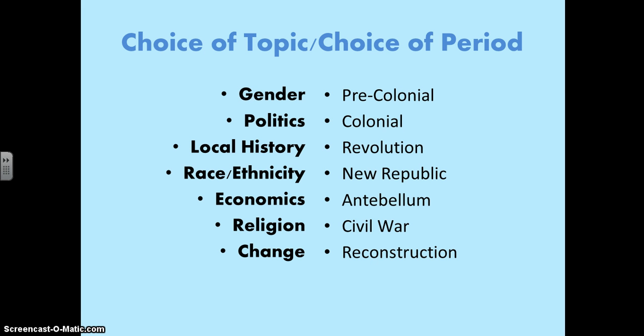I want students to be able to have a choice in the content that they review or do a final project on, so they can mix and match to decide what would be best. For example, they could do a project on politics during the colonial age, or local history during the reconstruction, or race and ethnicity during the civil war. Some of them will work really well together.